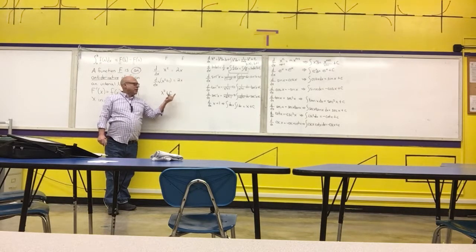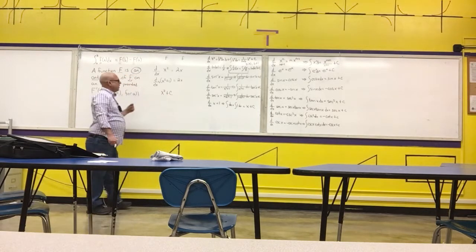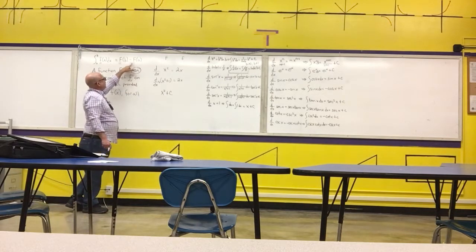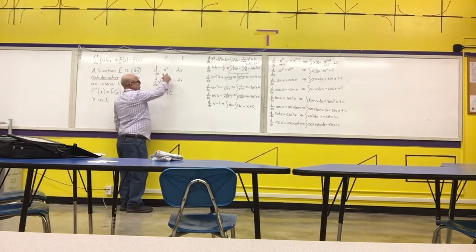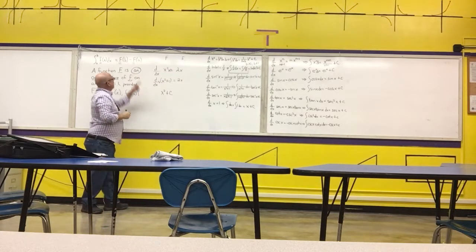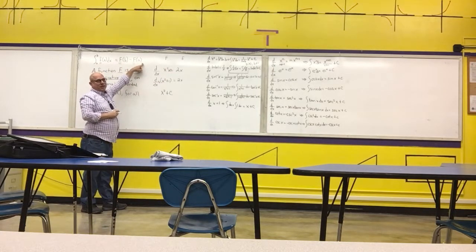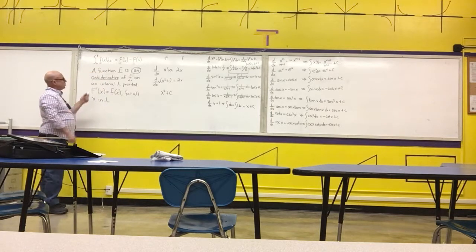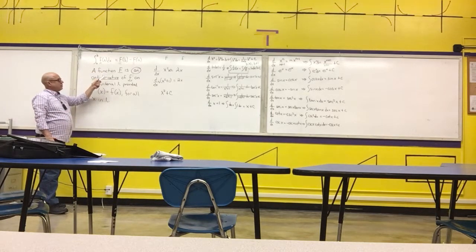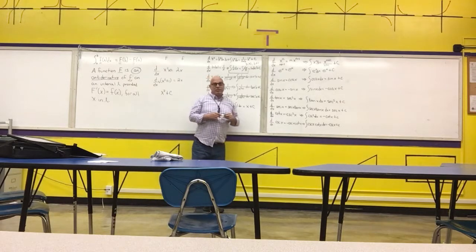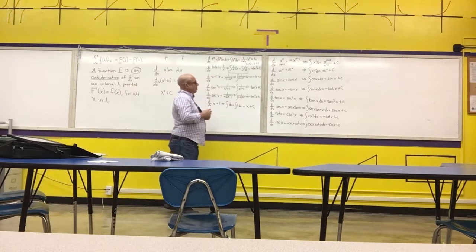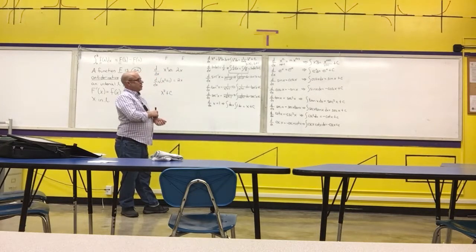We're going to figure out how to deal with that constant in some of the work in this chapter for initial value problems. We're also going to see that when choosing the constant for the Fundamental Theorem of Calculus formula in Chapter 5, we can pick the easy constant — plus 0 — because the constants subtract from each other and go away. Basically, we need to be able to undo derivatives, and there are 14 derivatives we use primarily in semester one that we need to know how to undo.